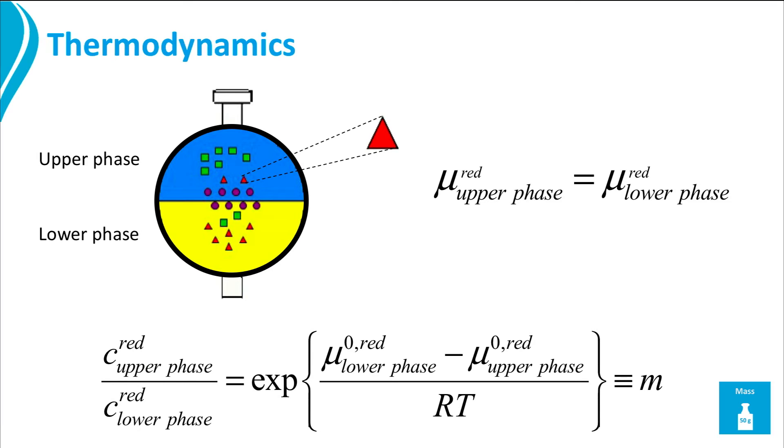The distribution occurs if the chemical potential of the pure components, the mu zero in this equation, is different in both cases, which is generally the case. In contrary to thermodynamics, where we generally look at systems in equilibrium, transport phenomena deal with non-equilibrium systems.